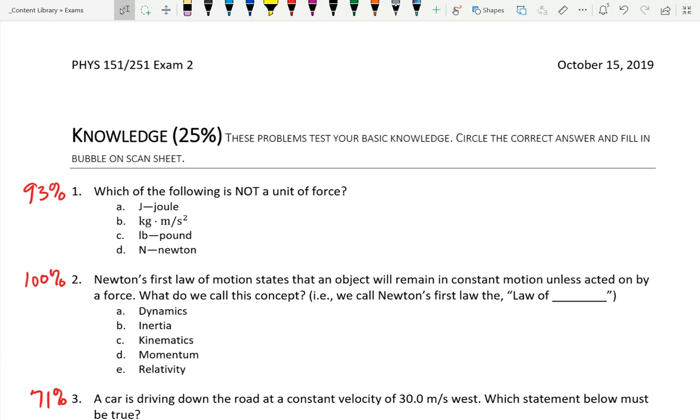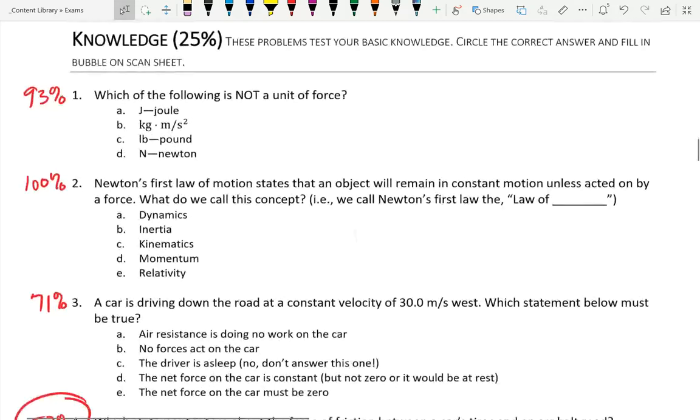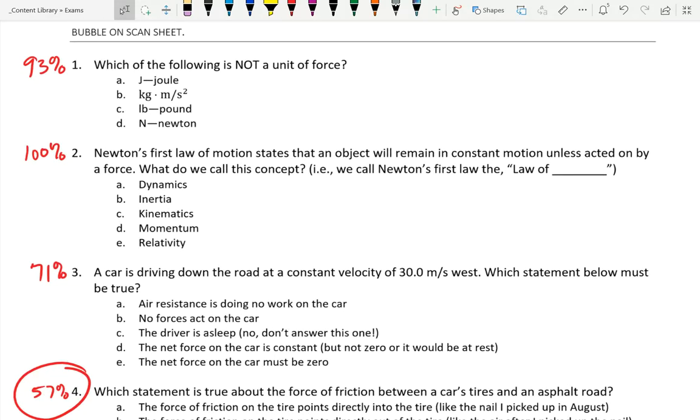Here I've written what the percentages for the class were on each problem. Only one person missed problem number one, but some people were confounded by the pound. The pound is a unit of force. One person wrote that you can convert a pound to kilograms. You cannot. Pounds are force. I push on this wall with a force of 20 pounds. I'm not pushing with any mass. They're different things. The SI equivalent for mass is the kilogram. The imperial unit for mass is slugs, like the UCSC sports teams.